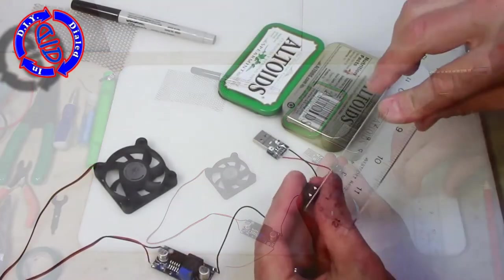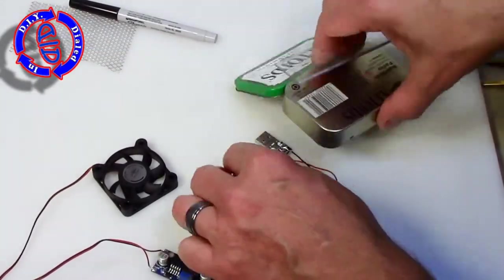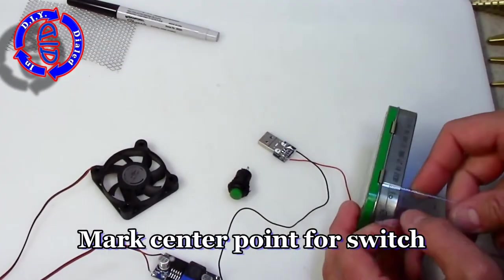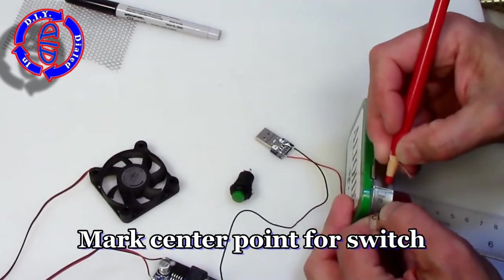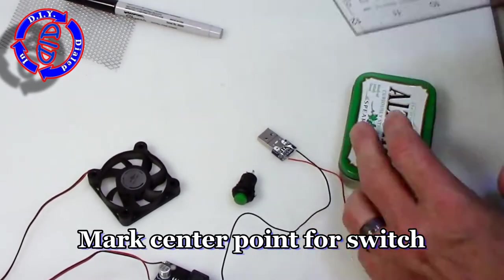You'll note that I'm using a simple round push-button switch. I'm going to put that on the hinge side opposite of the fan and opposite of that, I'm going to make a space for putting in the USB thumb drive.